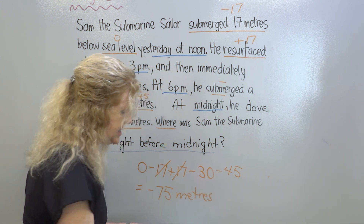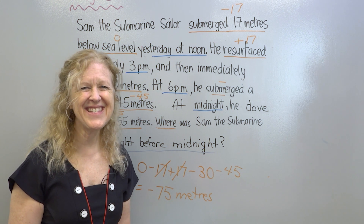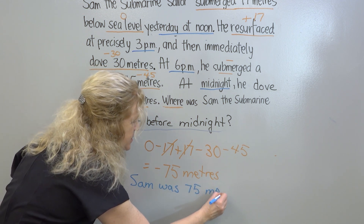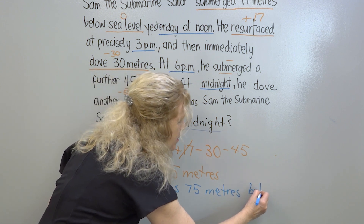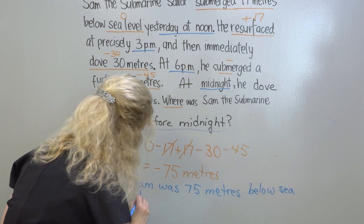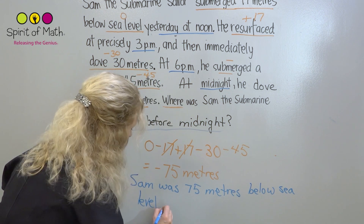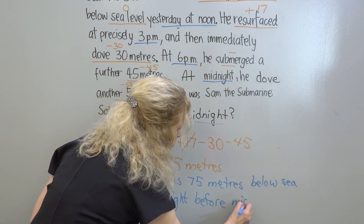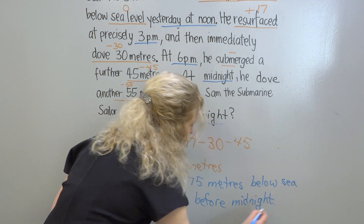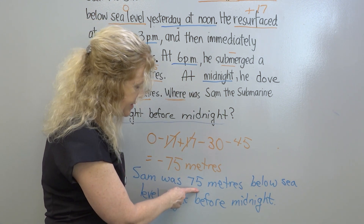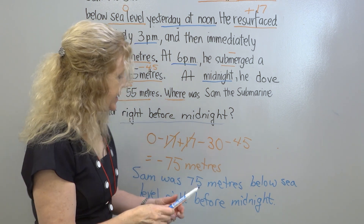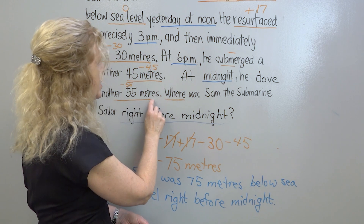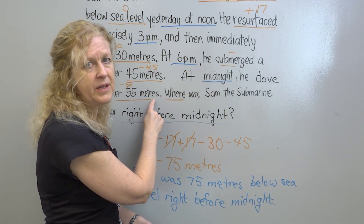So your final sentence answer isn't just 'he is negative 75 meters.' What you say is: Sam was 75 meters below sea level right before midnight. Don't put a negative in the sentence — he was 75 meters below. And that's important, because at midnight this is a red herring: at midnight he dove 55 meters. You didn't need to know what he did at midnight; you need to know what happened before that.